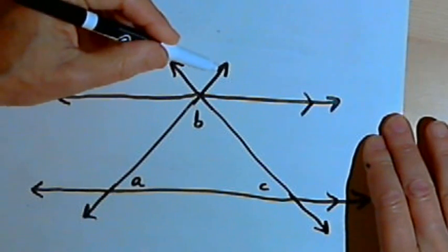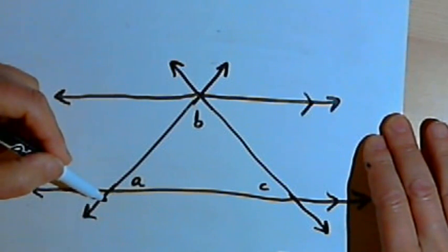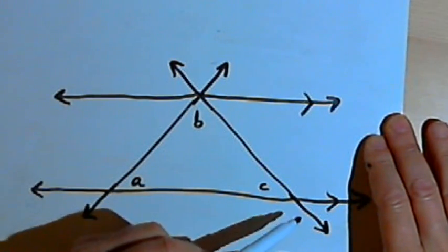And now each of those sides forms a transversal that cuts through the parallel lines.